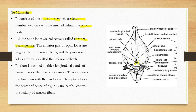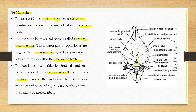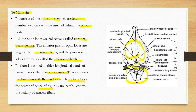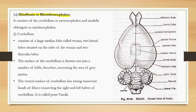The corpora quadrigemina connect the forebrain and hindbrain. The optic lobes function as the center of the sense of sight. The cerebellum controls the activity of muscle fibers.